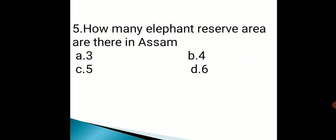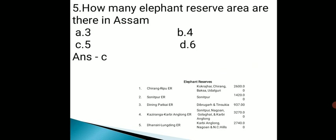Next question: how many elephant reserve areas are there in Assam? Options are 3, 4, 5, and 6. The correct answer is option C, that is five. The five elephant reserves are: Chirang-Ripu Elephant Reserve, Sonitpur Elephant Reserve, Dihing-Patkai Elephant Reserve in Dibrugarh, Dhansiri-Lungding Elephant Reserve, and the North Cachar Hills reserve covering parts of Karbi Anglong.